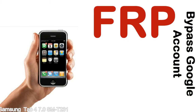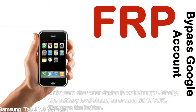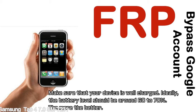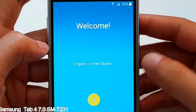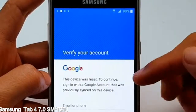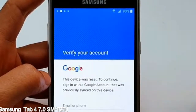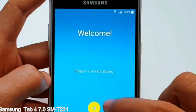Before starting: one, make sure that your device is well charged. Ideally the battery level should be around 60 to 70 percent — the more the better. Two, internet connection via WiFi. Here is a step-by-step guide on how to bypass a Google account on your Samsung Galaxy device.